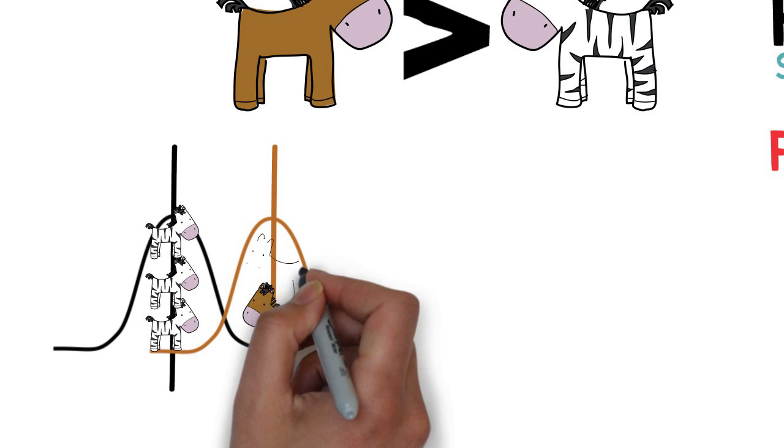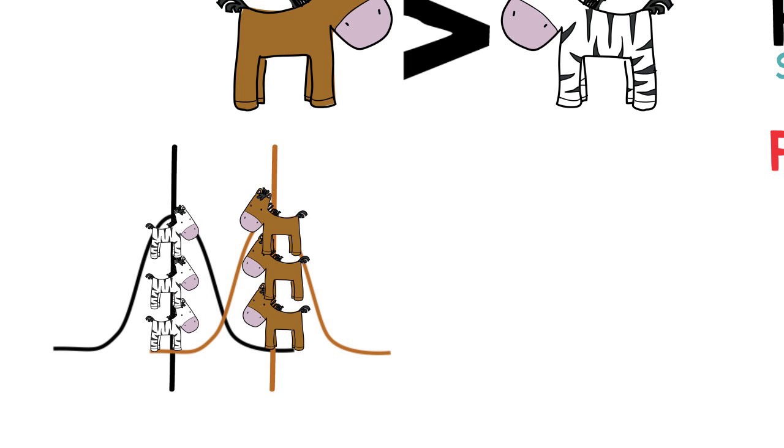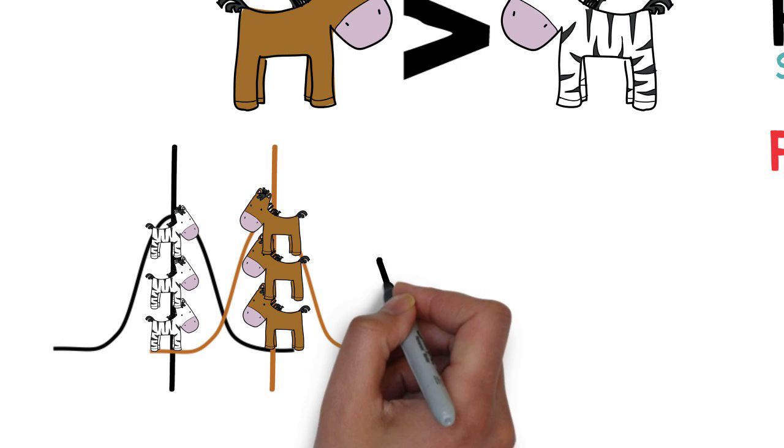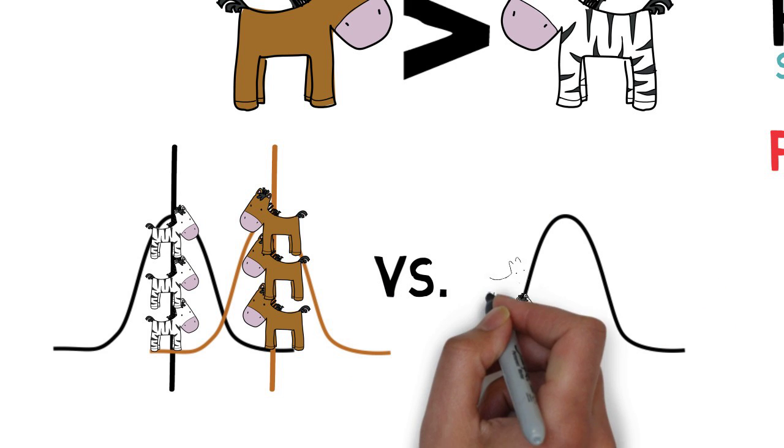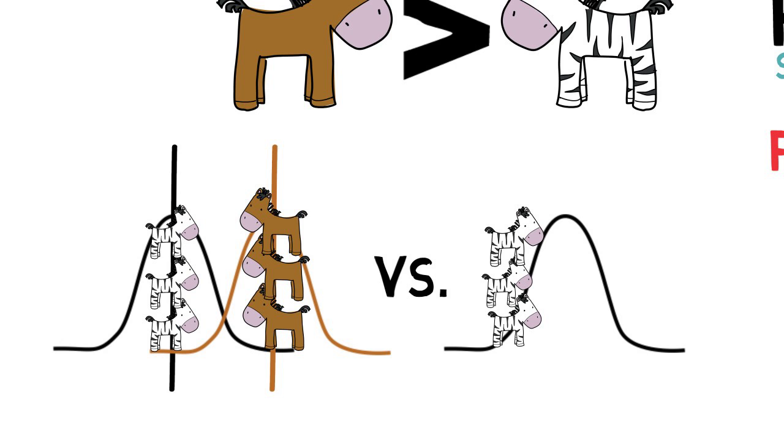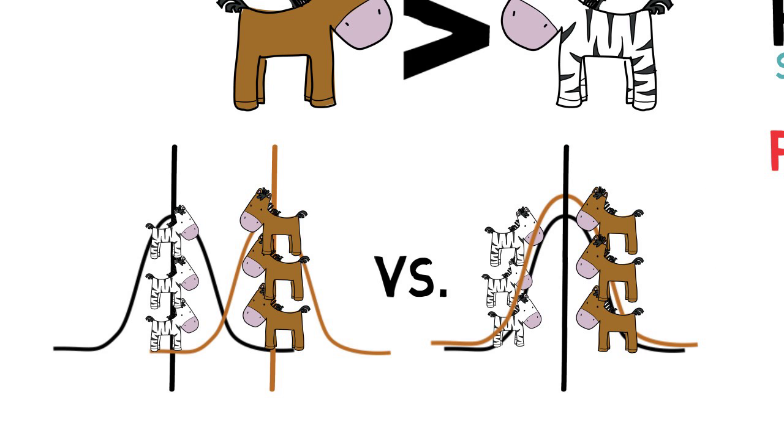So we want to know, if we see a difference between horses and zebras, is this because our idea is correct, or is it just because of random chance due to individual variability? Did we just happen to pick 20 huge horses and 20 tiny zebras, when in fact horses and zebras are on average the same size?